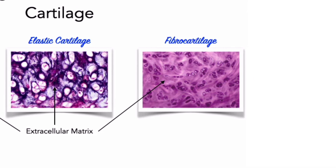Fibrocartilage has little ground substance, and its matrix is dominated by collagen fibers. These fibers are densely interwoven, making this tissue extremely durable and tough. Pads of fibrocartilage lie between the spinal vertebrae, between the pubic bones of the pelvis, around tendons, and around or within a few joints. In these positions, the pads resist compression, absorb shocks, and prevent damaging bone-to-bone contact.